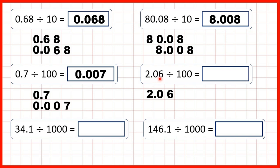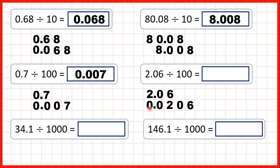Now 2.06 — we write the number out and copy down the decimal point. We're dividing by 100, so digits move two squares to the right, since 100 has two zeros. Another way to think about dividing by 100 is that it's the same as dividing by 10 and then by 10 again — so we move the digits two squares to the right. Copying each digit two squares to the right, we get an empty square after the decimal point, so we write a zero there and a zero before the decimal point, giving us 0.0206.